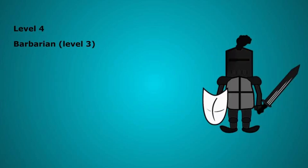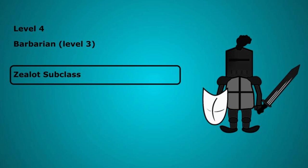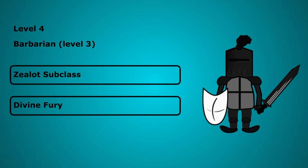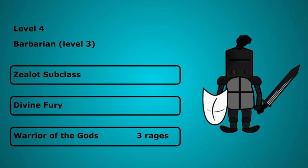Level 4 we take Barbarian again picking a primal path. As a born demigod, a former serving weapon of a god and later as the god of war himself, we need at least some divine flavour. We are taking the zealot subclass. You gain the divine fury feature and will pick the radiant damage type. When you are raging you can add 1d6 plus half of your Barbarian level in radiant damage to the first hit of each of your turns.